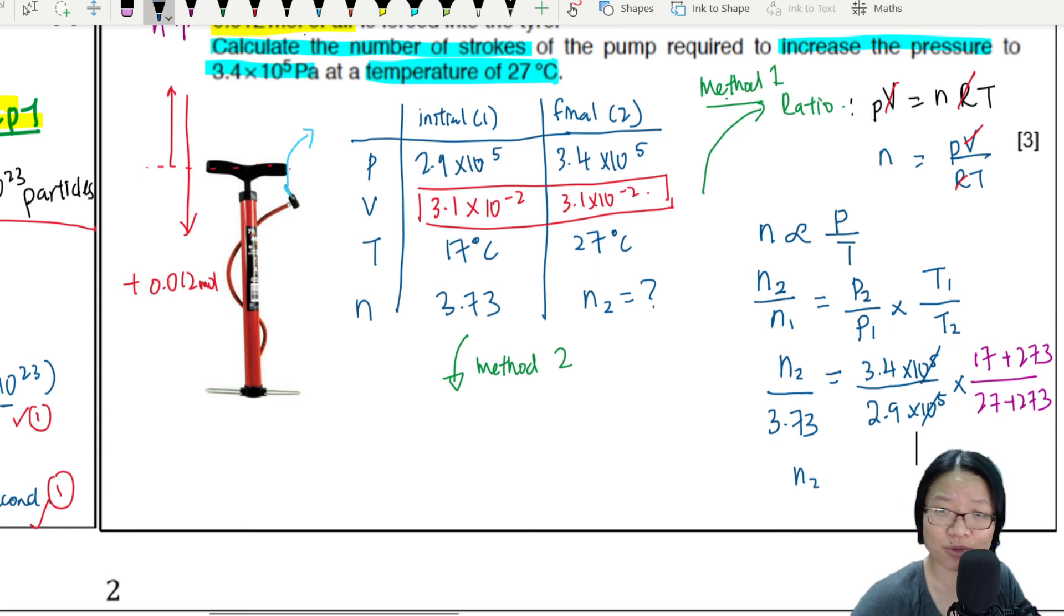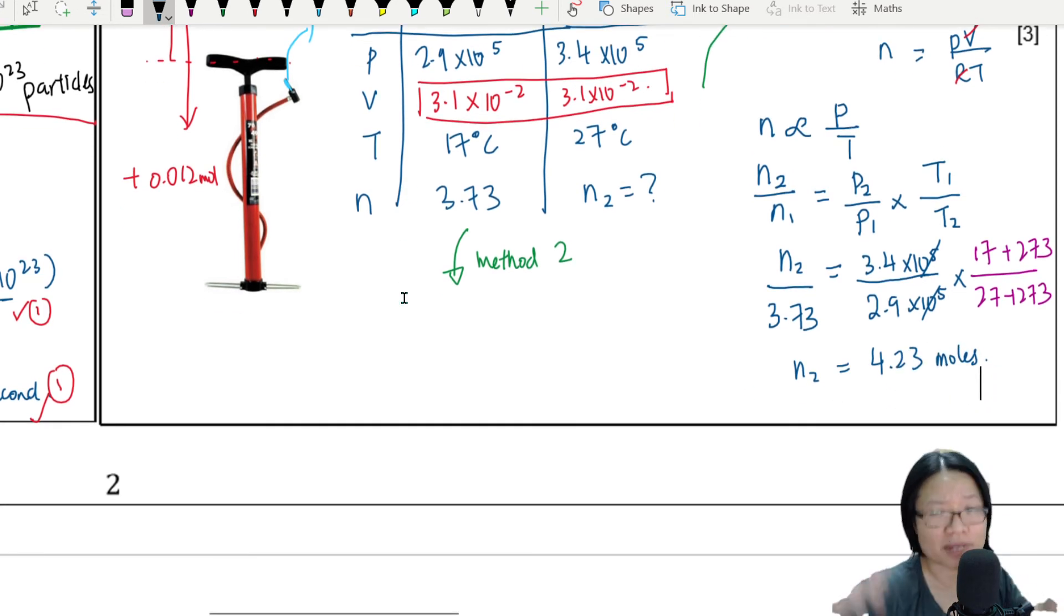So use calculator, find n2. Now. Okay, after consulting my calculator, the value I got is 4.227333. Okay, 4.23 moles.